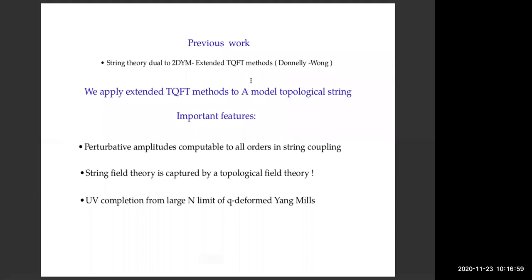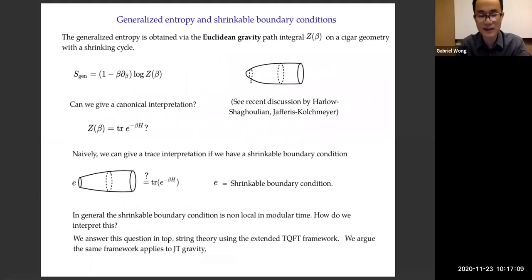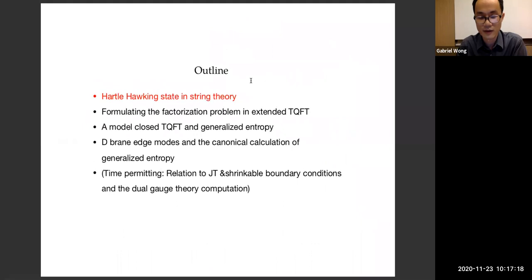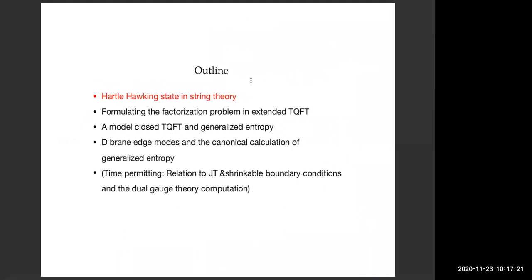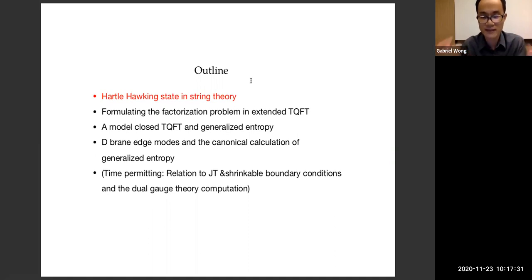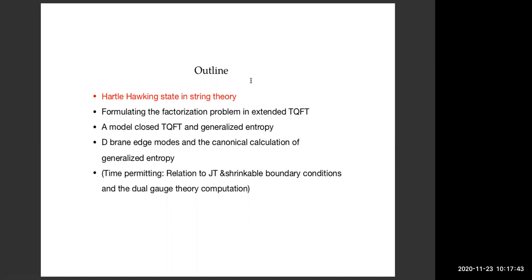Question: Are you claiming that you have a topological closed string field theory for the A-model? Answer: There is a class of target spaces which are rank-two bundles over a Riemann surface for which Vafa, Aganagic, and Marino showed that if you look at the target space amplitudes of the A-model string, you can study how these amplitudes get cut or included. The rules for cutting up — are you asking whether there's a prescription for a closed string field theory in the topological model? From my point of view, if I can tell you all of the target space multi-string amplitudes, that is the string field theory: the Hilbert space of many strings and the amplitudes for multiple string states.